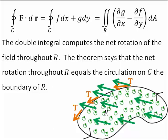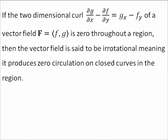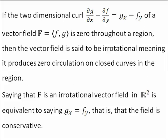If the two-dimensional curl of a vector field is zero throughout a region, then the vector field is said to be irrotational, meaning it produces zero circulation on closed curves in the region. Saying that F is an irrotational vector field is equivalent to saying that G partial X equals F partial Y — that is, that the field is conservative.